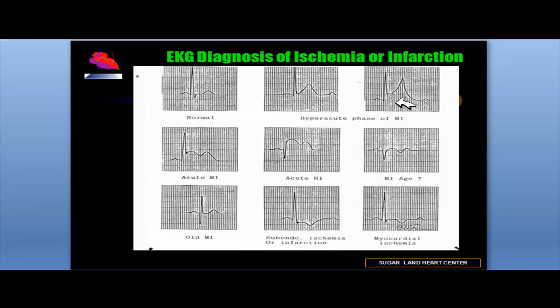It does not necessarily suggest myocardial infarction at this stage, as acute coronary spasm can also cause it. ST segment elevation is a sign of acute myocardial ischemia or injury. That is one of the reasons we see ST elevation in patients with acute pericarditis, because of the inflammation of the underlying myocardium seen during diffuse pericarditis.